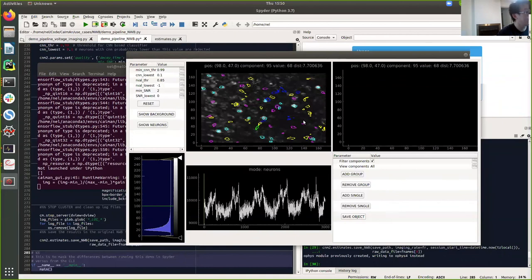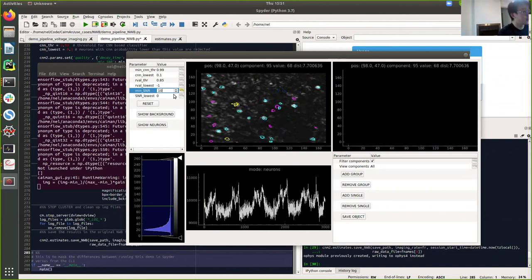And finally, we want to see the reconstructed video. So the left is the raw movie. The middle is the reconstructed one. And the right is the residual movie. So we should see a clearer spatial footprint in the middle. And we should see almost no components in the residual movie. Here we can save our results into NWB format. It's really easy.